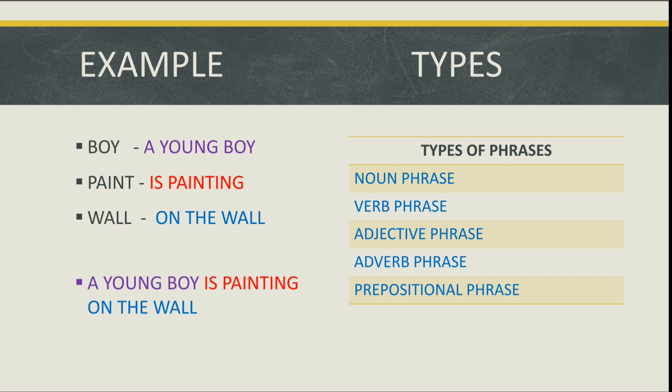Here are some examples: 'a young boy' is a noun phrase, 'is painting' is a verb phrase, and 'on the wall' is a prepositional phrase. There are also two more types of phrases apart from noun, verb, and prepositional phrases — adjective phrase and adverb phrase. If you haven't already watched the parts of speech video on my YouTube channel, the link is in the description box.